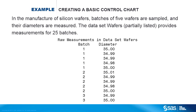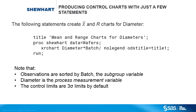Here's an example from integrated circuit manufacturing. We are interested in the diameter of silicon wafers. Wafers are sampled to create 25 batches of 5 wafers each. This code uses the Shewhart procedure to create control charts of subgroup means and ranges for the wafer diameters. Batch is the subgroup variable; each batch is one subgroup in the control chart. The way in which wafers are selected for subgroups is critical — measurements in a subgroup should be made under conditions that are as close to identical as possible. The goal is for the variation within a subgroup to reflect common cause variation, and for the variation between subgroup summary statistics to reflect special cause variation.